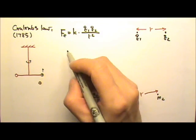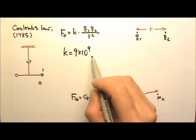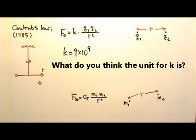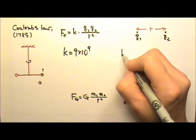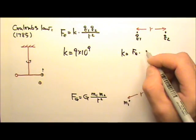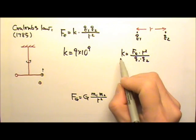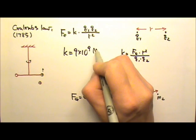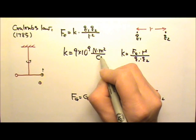This constant k here is 9 times 10 to the 9th. What do you think the unit for k is? If we solve for k, we'll see that k equals the electric force times the r squared divided by q1 times q2. Therefore, the unit for k must be newtons times meters squared divided by coulombs squared.